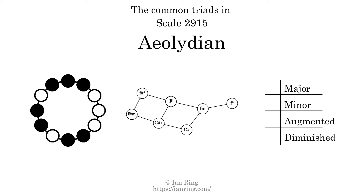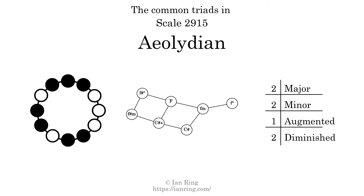Here are the common triads present in this scale. The diagram in the center is a graph of parsimonious voice leading between triads. There are two major triads, two minor triads, one augmented triad, and two diminished triads. Here is a Hamiltonian path of parsimonious voice leading that uses all the triads.